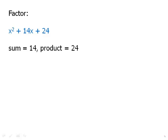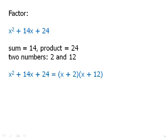We could do 4 times 6. That's not the right sum. We could do 3 times 8. That's not the right sum. We could do 2 times 12. That's the right sum. And so, the numbers that we need are 2 and 12, and this is the factored form, (x + 2)(x + 12).